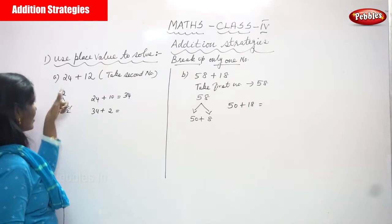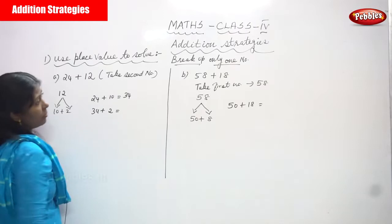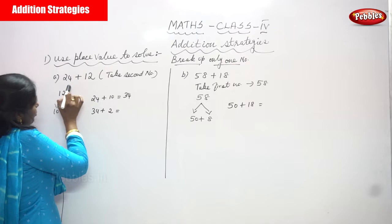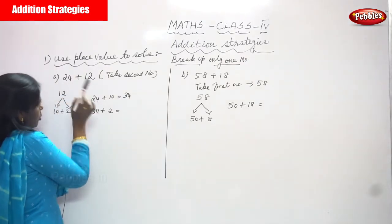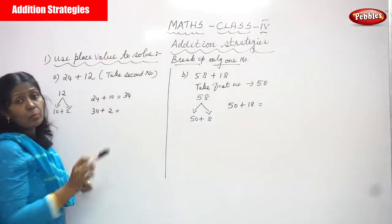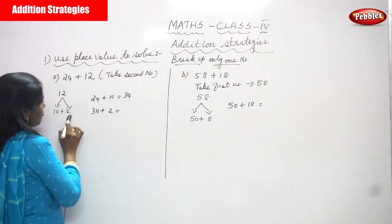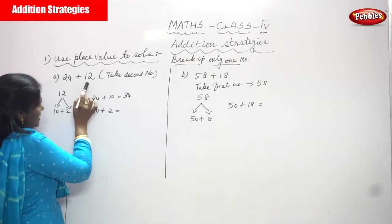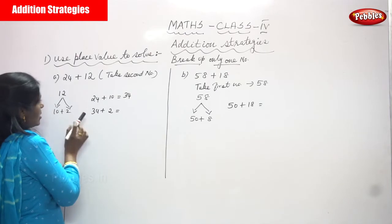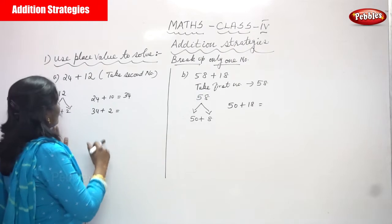The first example is 24 plus 12. 24 is the first number and 12 is the second number. We are going to use the second number, so we split 12 into 10 plus 2. This is the ones place and this is the tens place — we split the number according to its place value.